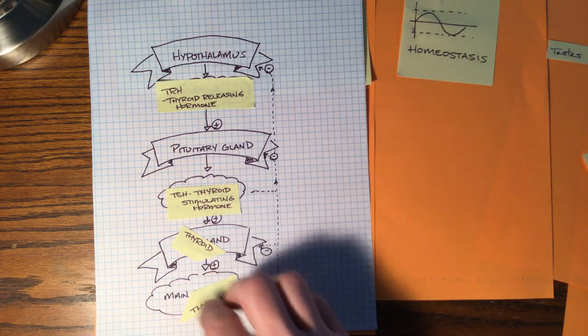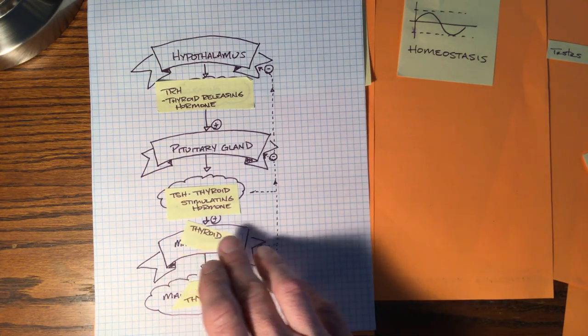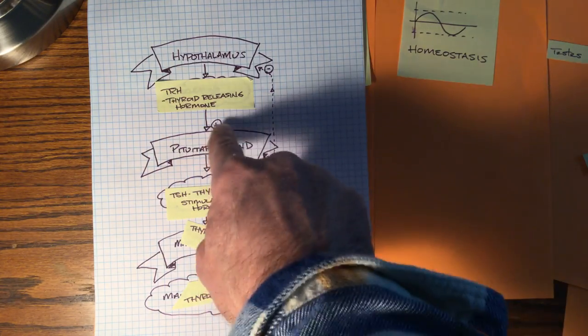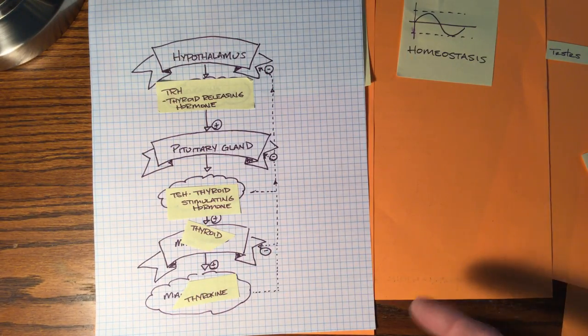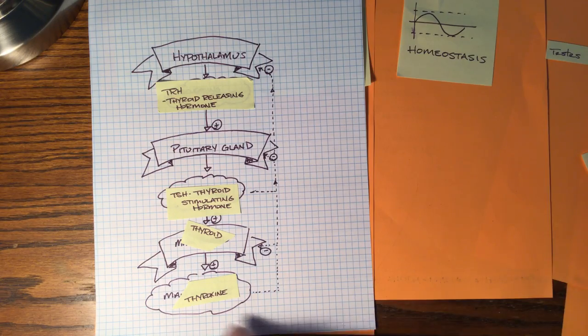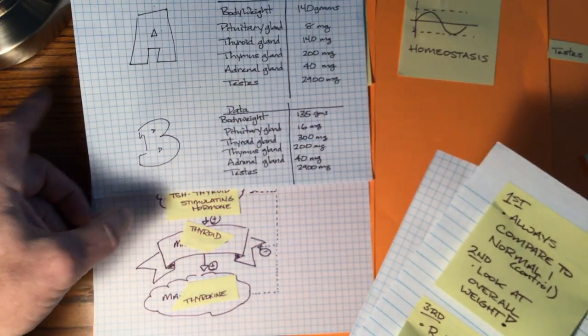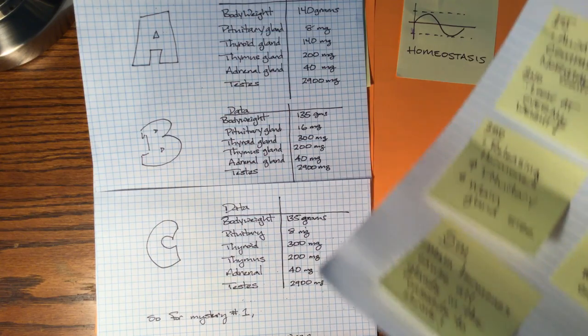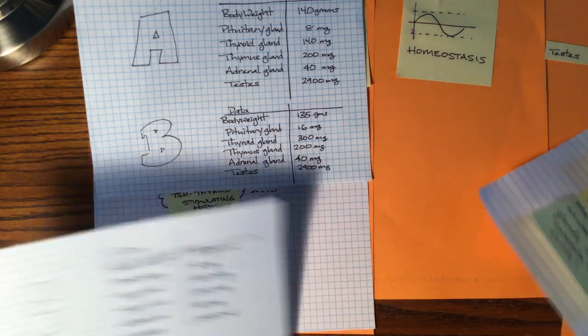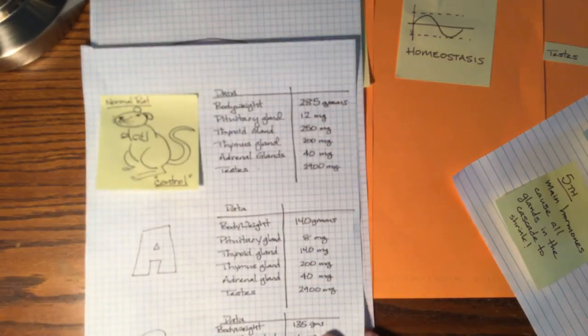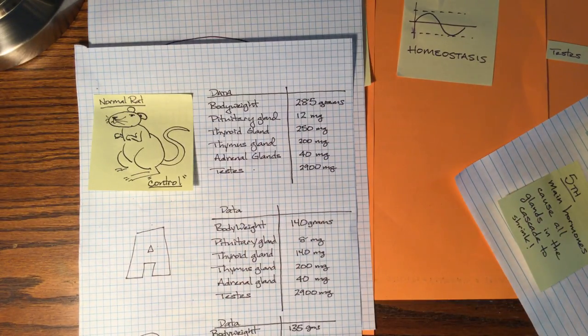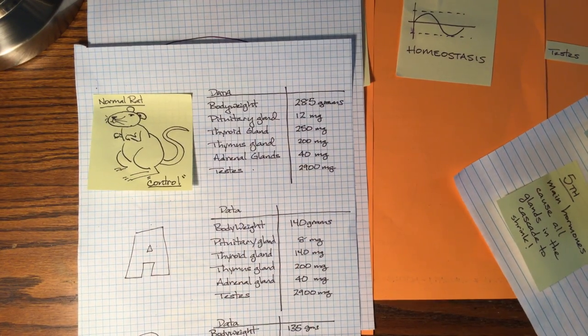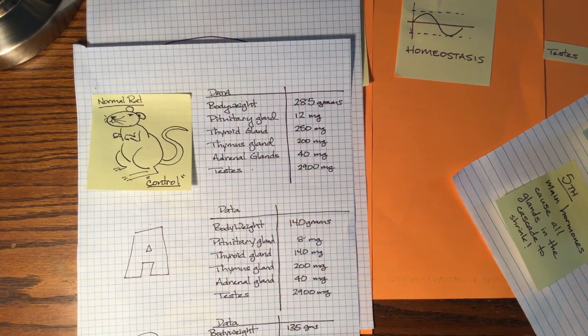And lastly, if you don't see that happening, look at the thyroid and look at the pituitary. If they both shrink or experience what we know as atrophy, then thyroxine is the culprit. So we're looking at rats A, B, and C. We're looking at their data. Look at those numbers and compare them to the control data, and then come up with your answers. That's mystery number one worth 15 points.